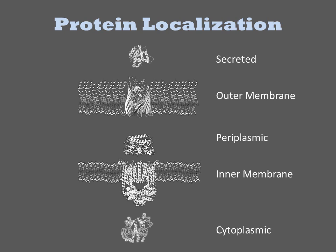Beyond the inner membrane is a gelatinous environment called the periplasm. Proteins can be targeted here as well. Then there is the outer membrane, which also contains proteins. Finally, there is the extracellular environment. Thus, there are five distinct regions to the bacterium, and proteins become localized to these regions through targeting.